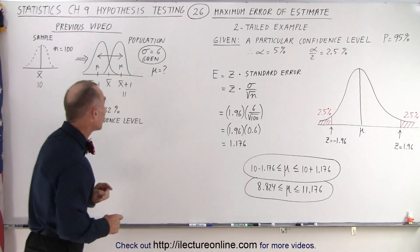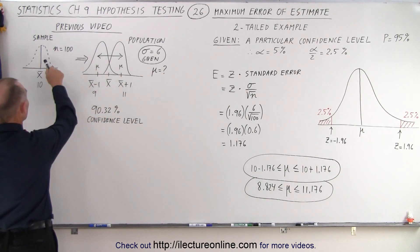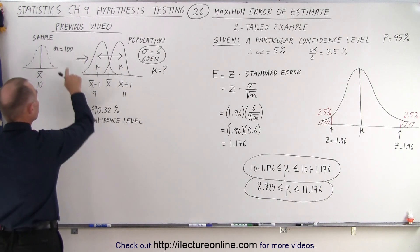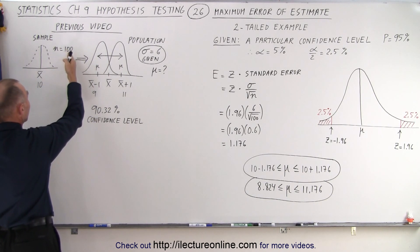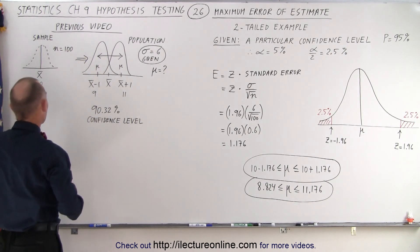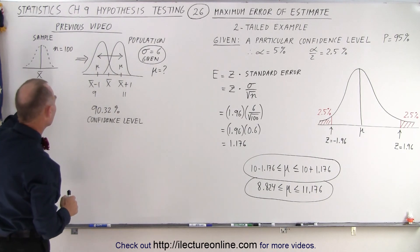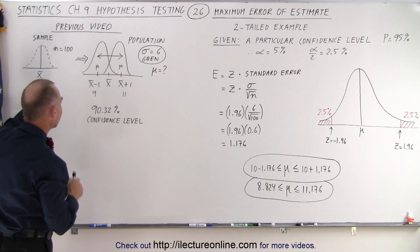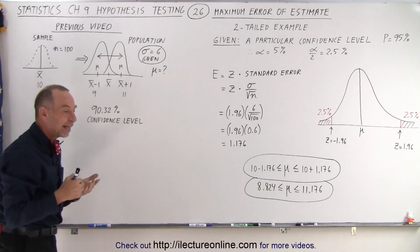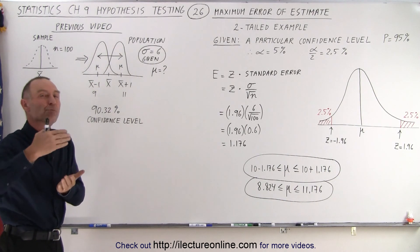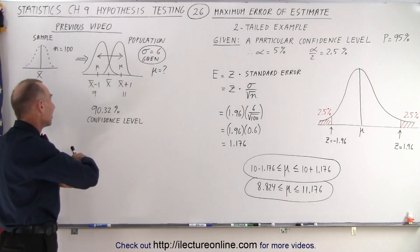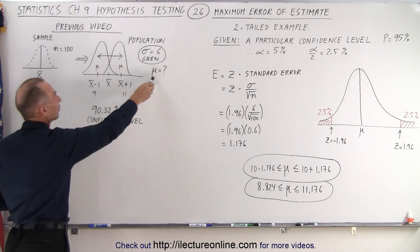In the previous video, we did that by taking a random sample of 100, so the sample size was 100, and let's assume that the mean of the sample was equal to 10. Then we assumed the error could be one more than 10 or one less than 10 as far as the mean of the population.